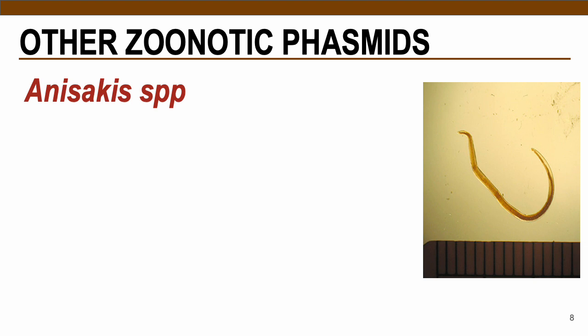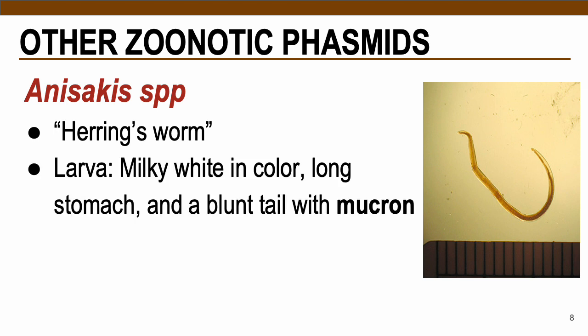The next parasite is Anisakis species, also known as the herring worm. Their larvae are milky white in color, with a long stomach and a blunt tail with a mucron. By the way, mucron is a parasitological term for an attachment organelle.